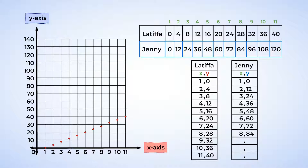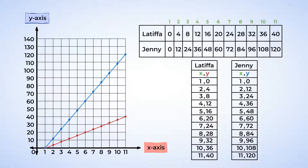Continuing Jenny's coordinates: (7,72), (8,84), (9,96), (10,108), (11,120). And now to plot them on the same coordinate plane. Looking at the graph, we can see two straight lines that both start at the same point at (1, 0). Jenny's line goes up faster and is steeper though.